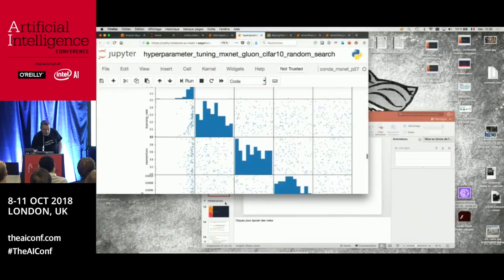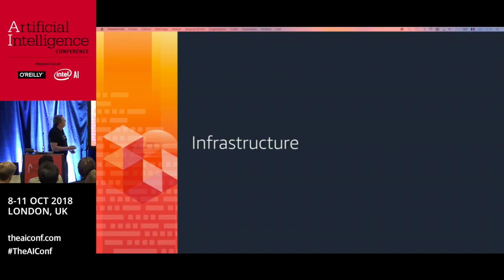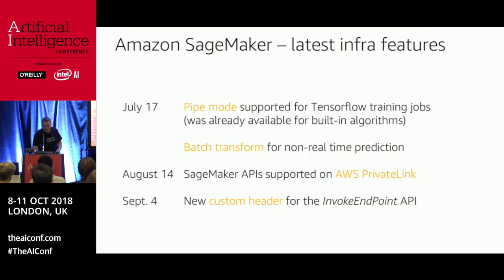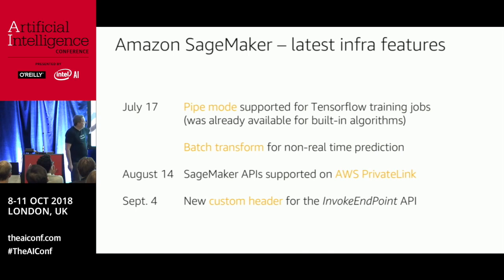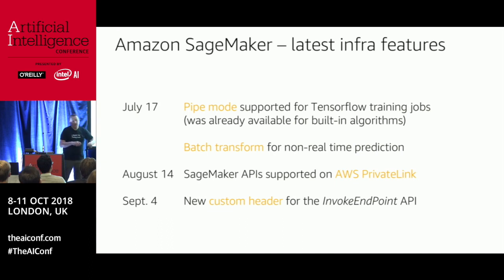I got a few more things to show you quickly. I've spent a lot of time on algorithms because they're really the core of SageMaker, but there are some infrastructure features worth mentioning: pipe mode, which is a way to stream data to instances allowing you to work with infinitely large datasets; batch transform, which lets you run prediction without deploying an endpoint; and PrivateLink, because every AWS talk needs something about VPCs.